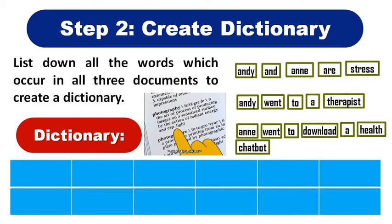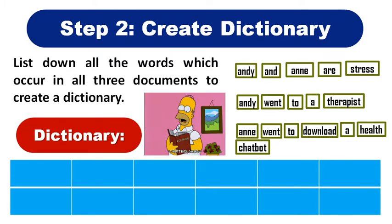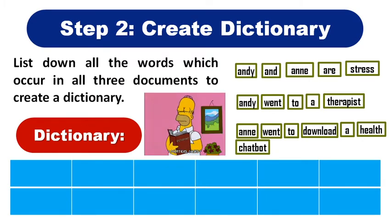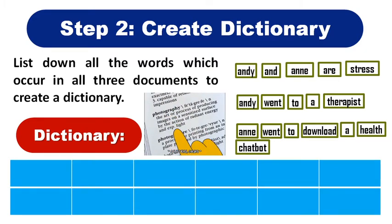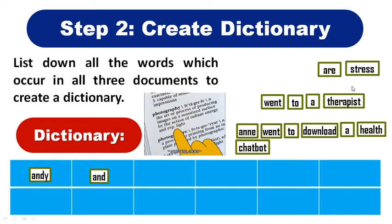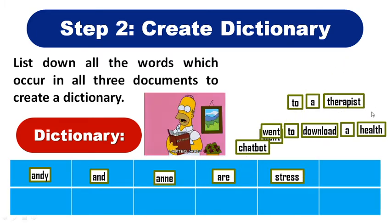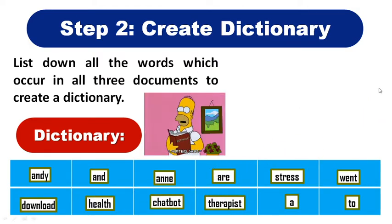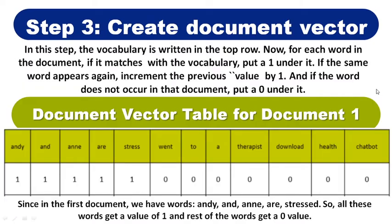Step 2 is to create the dictionary. After getting the tokens, we list the words only once in the dictionary. If a word like 'Andy' appears twice, it is written in the dictionary only once. So 'Andy' twice becomes one entry, and this way all unique words are listed in the dictionary — event, then once, therapist, download, chatbot, and health — and our dictionary is ready.